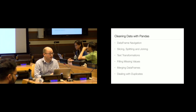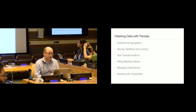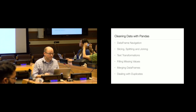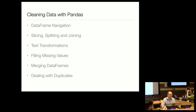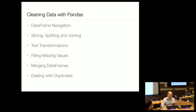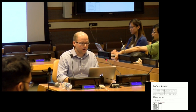The first thing I'm going to talk about is the DataFrame object and how you go about navigating that in Pandas. Then we'll talk about slicing, splitting, and joining DataFrames. After that, we'll get into the different ways that you can do text transformations with Pandas. We'll talk about missing values and how you can fill in and deal with those in various ways. Then we'll look at merging DataFrames when you want to join two different tables together, and finally grouping by values in a DataFrame and working with duplicates.